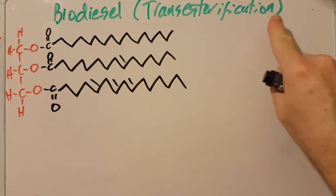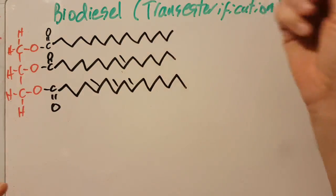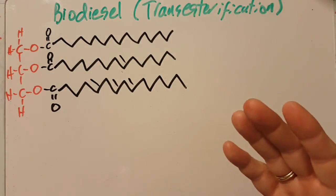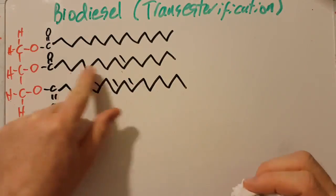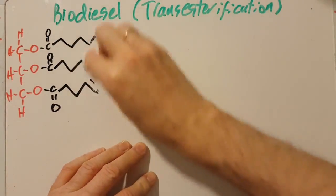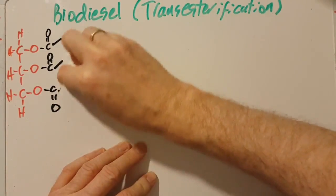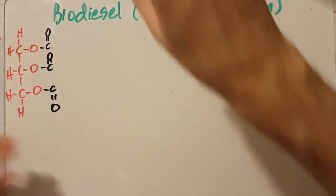But trans-esterification allows you to snip those three off, and now you've got three individual molecules, which are actually much more runny, less viscous. Now these are annoying to draw out time and time again, so you're allowed to replace them with a letter of the alphabet that hasn't been used for an element yet, which is R.